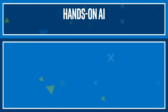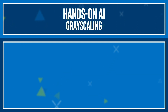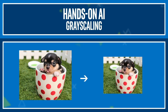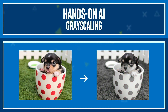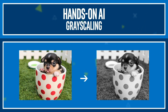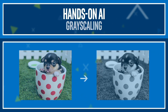Another type of transformation is grayscaling, which turns a color RGB image into images with only shades of gray representing colors. Grayscaling transformations throw away noisy pixels and make it easier to detect shapes in the picture. Depending on your application, grayscaling might be a useful preprocessing step.